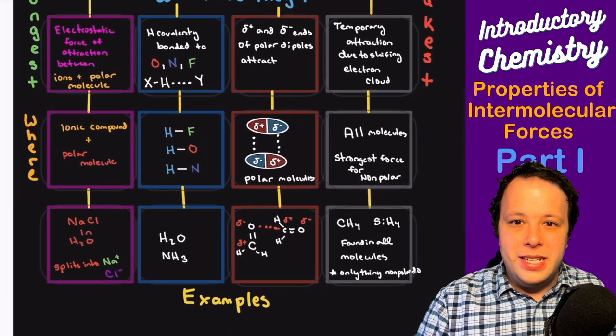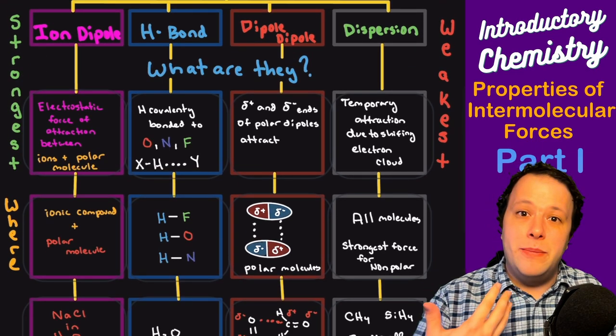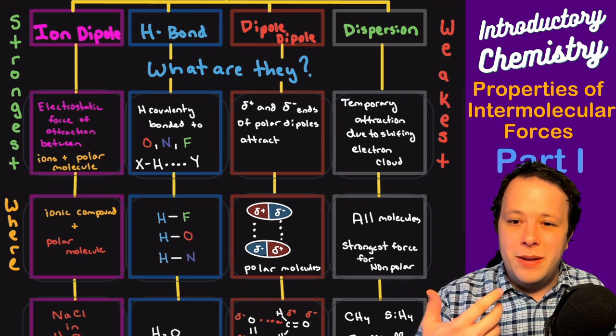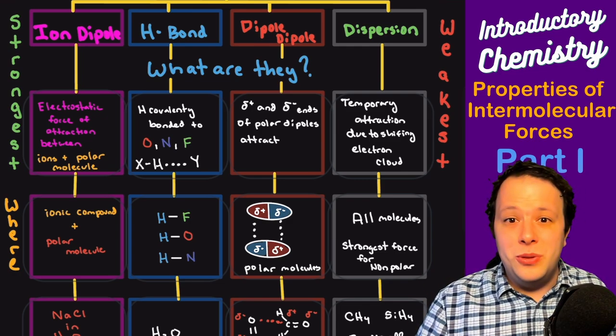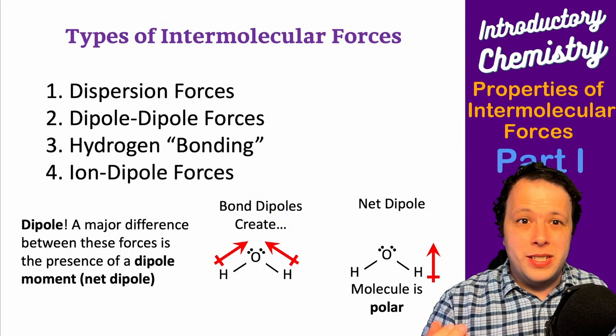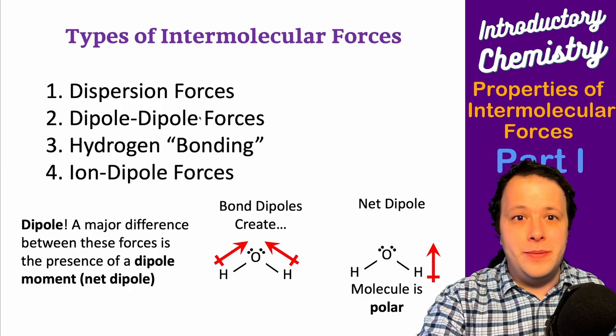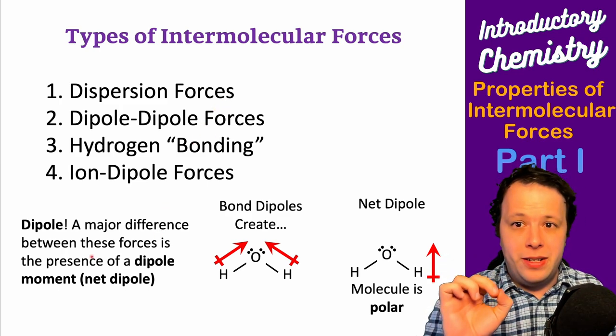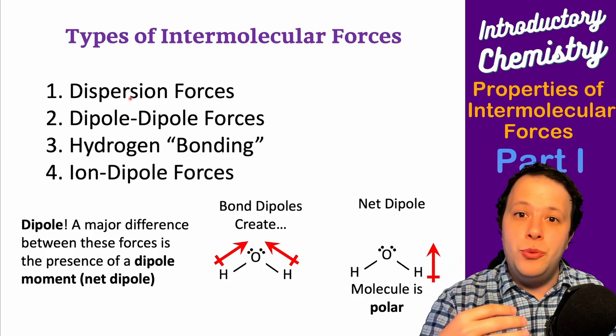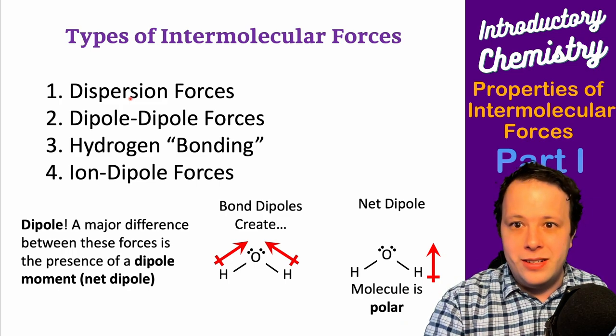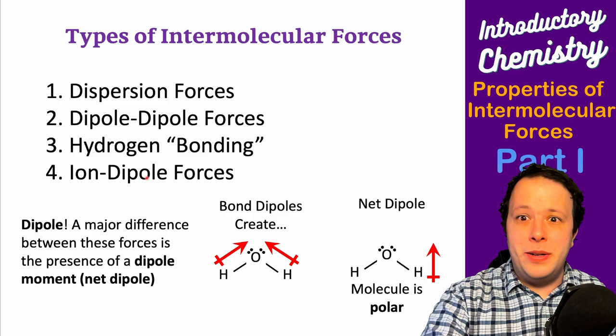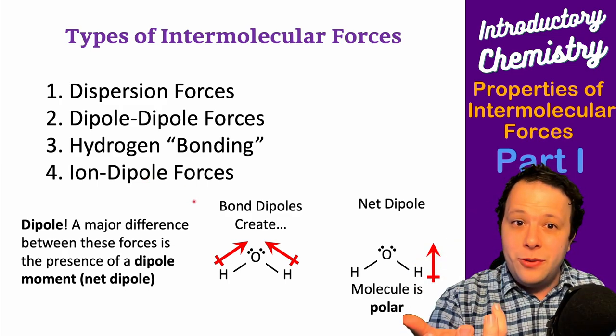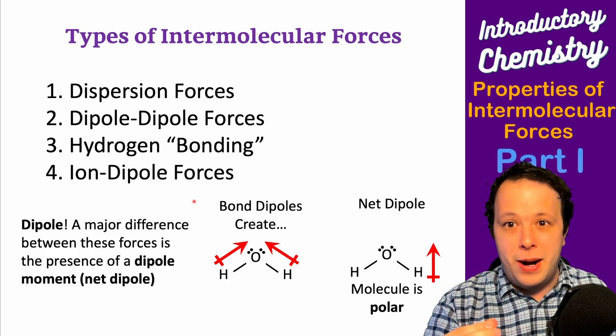When looking at all molecules, we go from right to left for strength. Dispersion is the weakest, ion-dipole is the strongest. With the four intermolecular forces, what sets them apart is the word dipole. Dispersion forces are non-polar—they do not have a net dipole due to geometry. Dipole-dipole, hydrogen bonding, and ion-dipole have that unevenness from the electron cloud. When that occurs, they interact to create different forces and change their properties.